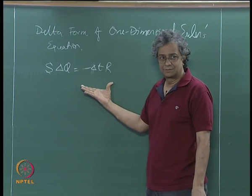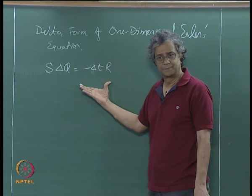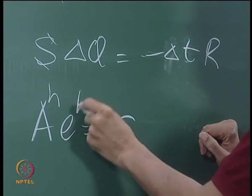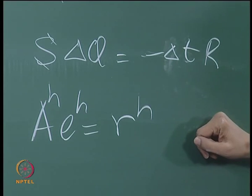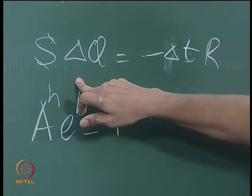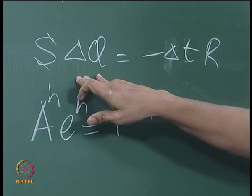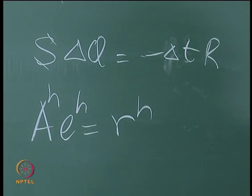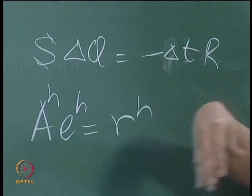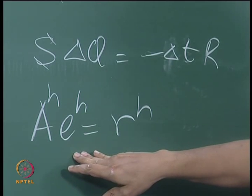If you look at this equation, it looks like the correction equation. The correction e^H is the correction to the current estimate, just like delta q is the correction to the current candidate solution. If we are only looking at steady state, delta q is just like this correction — residue, residue. So there is no reason to treat it differently.